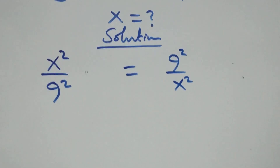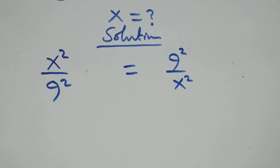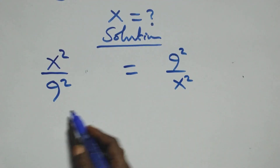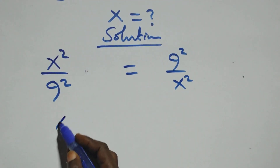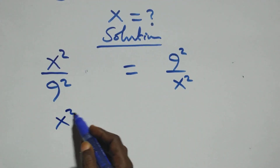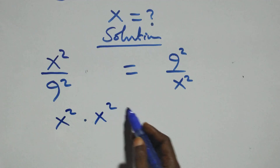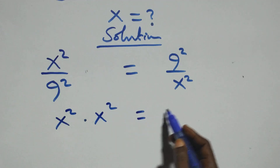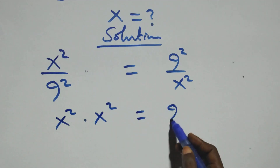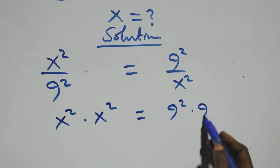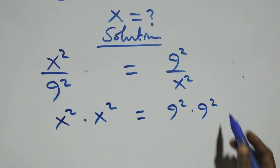From here we cross multiply: x² times x² equals nine squared times nine squared.